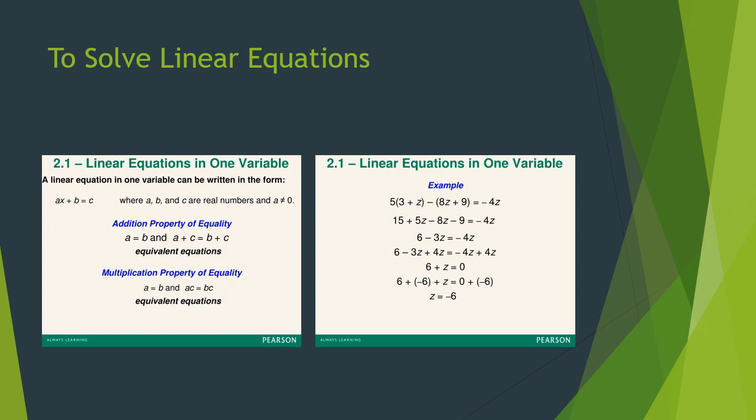A linear equation can be written in the form Ax plus B equals C, where A, B and C are real numbers. The addition property of equality states: if A equals B, then A plus C equals B plus C. The multiplication property of equality states: if A equals B, then AC equals BC. Another example: 5 times (3 plus z) minus (8z plus 9) equals minus 4z. Opening the bracket: 15 plus 5z minus 8z minus 9 equals minus 4z. Solving: 6 plus z equals 0, so z equals minus 6.